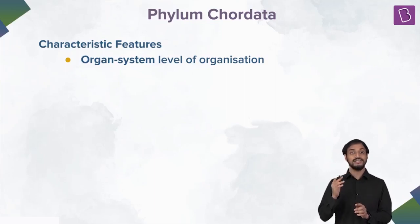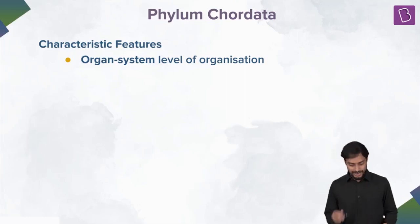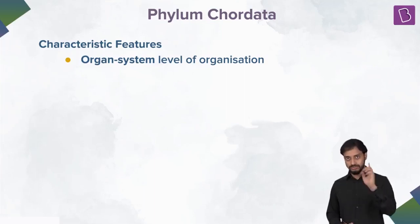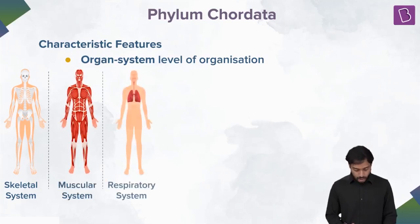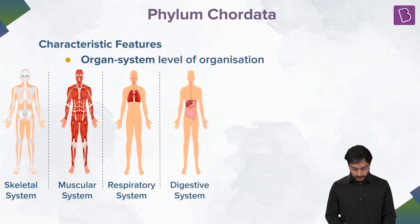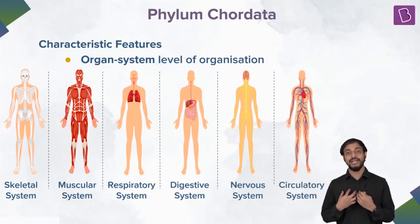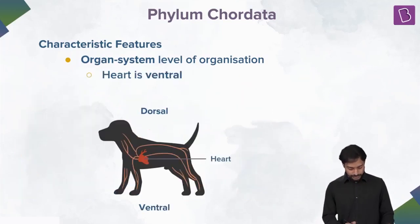Chordates have organ system level of organization. Recall the progression: cellular level, tissue level, organ level, and now organ system level. The organ systems present in our body include the skeletal system, muscular system, respiratory system, digestive system, nervous system, and circulatory system — all together making up what we are.